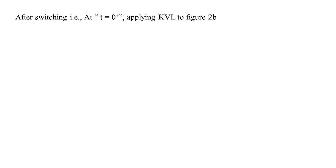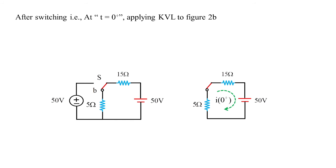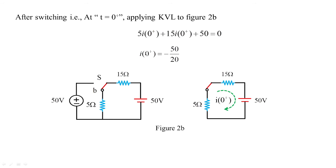After switching at t = 0 plus, applying KVL to Figure 2 after the switch moves from A to B: I(0+) = −50 / 20 = −2.5 amperes. This comes from the KVL equation with the capacitor voltage. Note: this is a capacitor, not an inductor — that is why even though the initial current before switching was 0, after switching the current has changed. With a capacitor, the current changes but not the voltage.